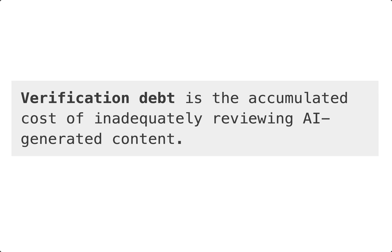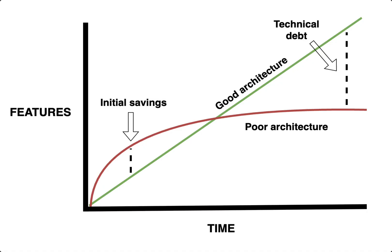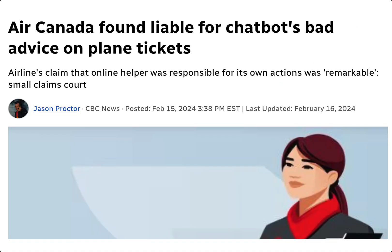Verification debt is the accumulated cost of inadequately reviewing AI-generated content. Like technical debt, it arises from prioritizing speed or convenience over thoroughness, except instead of primarily affecting the longer-term maintainability of technical solutions, it more broadly affects the trustworthiness, accuracy, and understanding of a range of outputs, such as academic papers, code, and many other documents and artifacts.